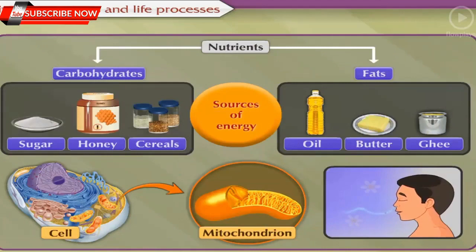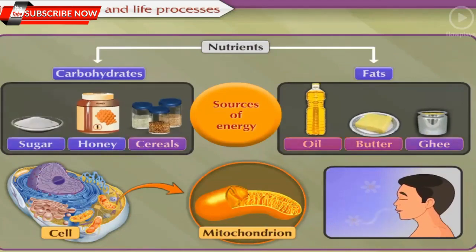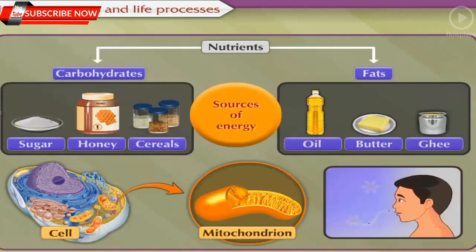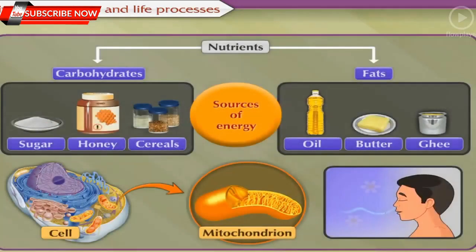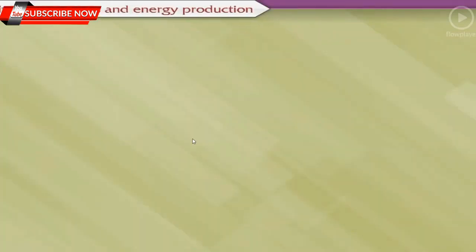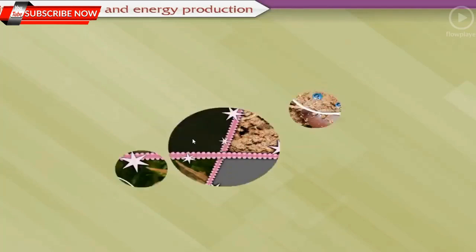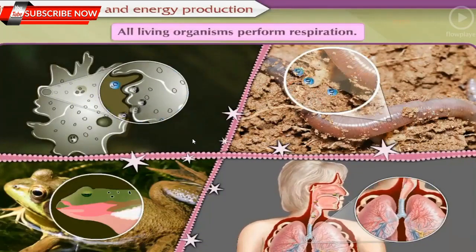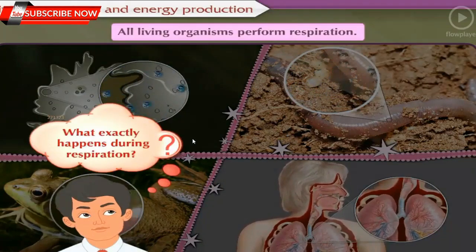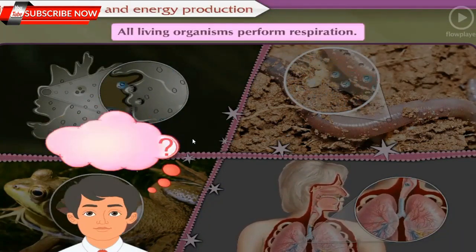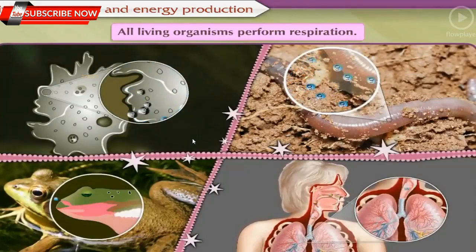We have learned that for energy production, nutrients and oxygen are necessary — but how do they together produce energy? To find the answer, let us move to the next part of the chapter: living organisms and energy production. All living organisms perform respiration. Let us do a detailed study of this life process.